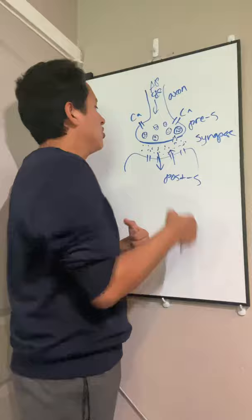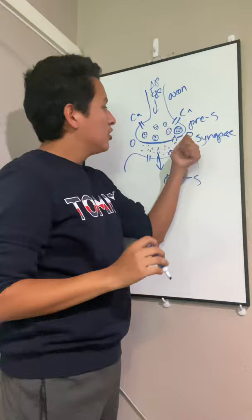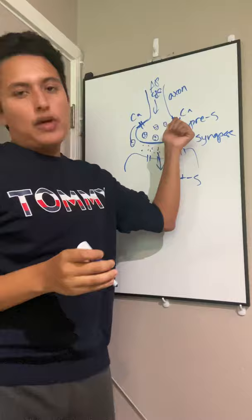In step six, we have these transmitter molecules that bind with the presynaptic receptors, essentially closing off the calcium channels that had been created earlier.